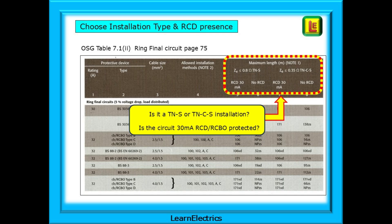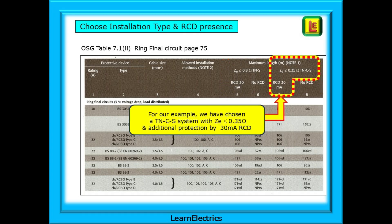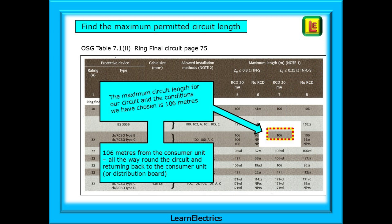Although all new circuits should now have this additional protection as standard. For our example, we've chosen a TNCS system with ZE equal to or less than 0.35 ohms, and with additional protection by 30 milliamp RCD. Now we can find the maximum permitted cable length for the circuit. The maximum circuit length for our circuit and the conditions we've chosen is 106 metres - a ring circuit. That is to say, 106 metres from the consumer unit, all the way around the circuit, and returning back to the consumer unit or distribution board.